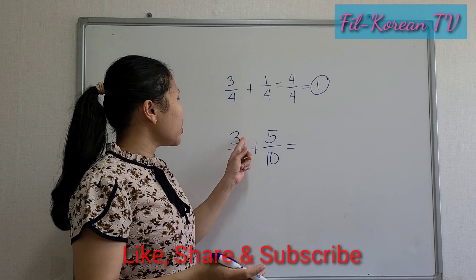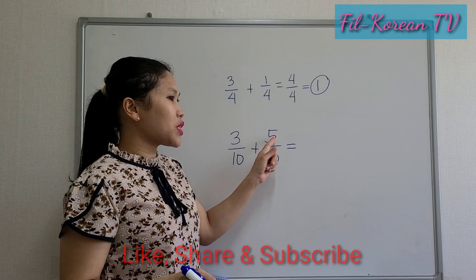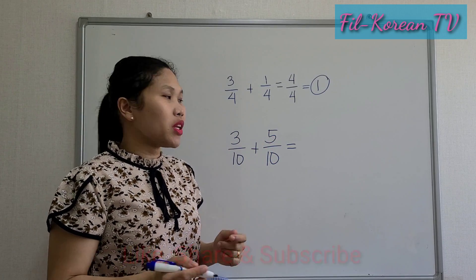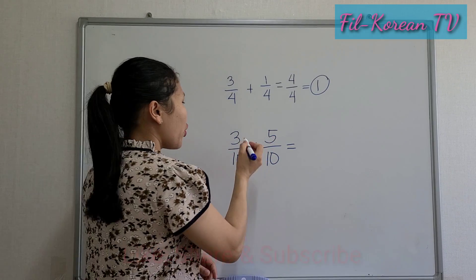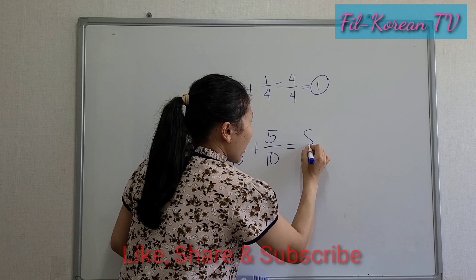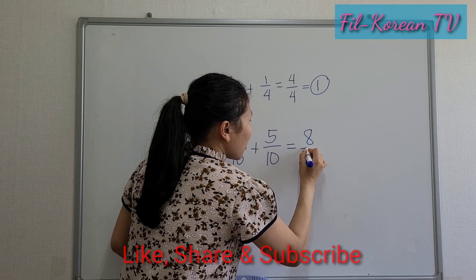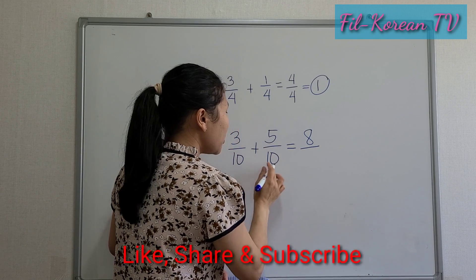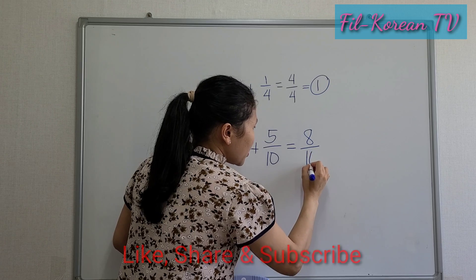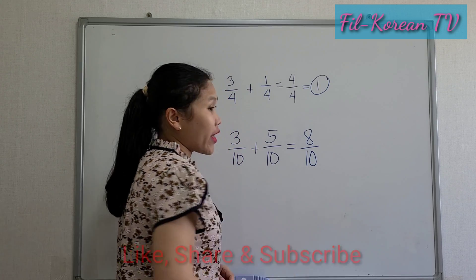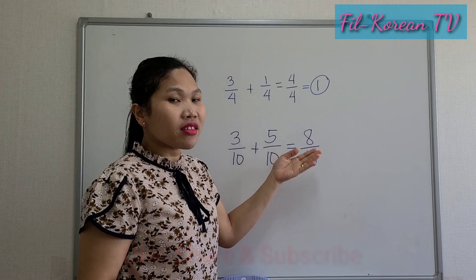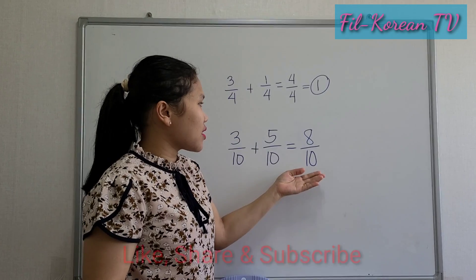The rule is: add the numerators and copy the common denominator. Three plus five equals eight, and the common denominator is ten — we will just copy ten. So the answer is eight-tenths.